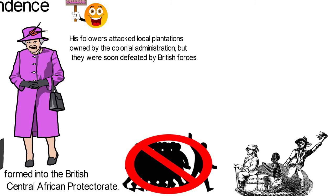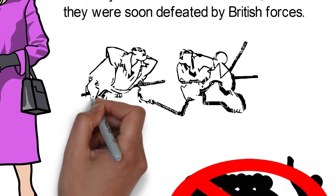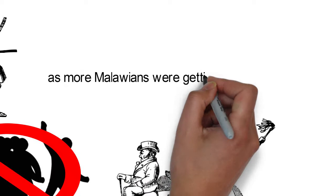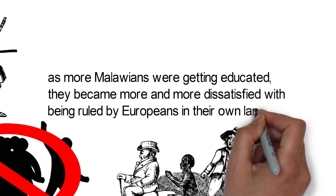Later on, during the Second World War, up to 30,000 Malawians were recruited to fight for the British. With time, as more Malawians were getting educated, they became more and more dissatisfied with being ruled by Europeans in their own land.